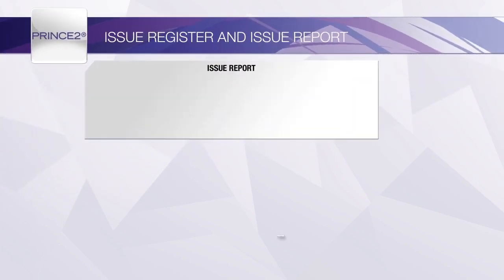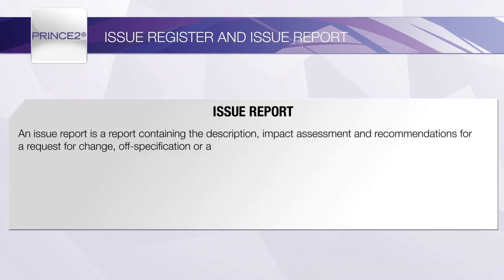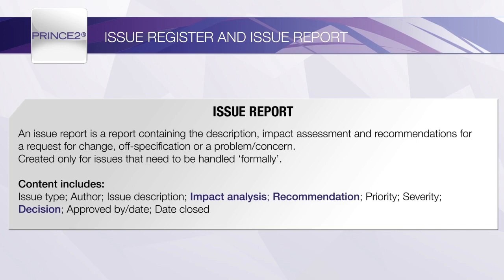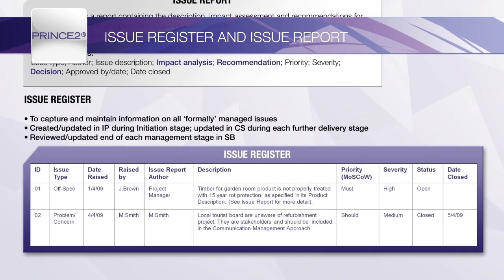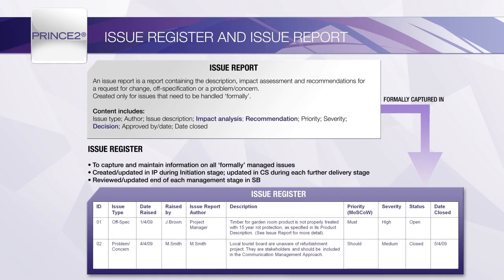It is important to understand the differences between an Issue Report and the Issue Register. An Issue Report is created to capture information about an issue that needs to be managed formally and will be created initially to record the information that is known. Thereafter, it is updated following an impact to include details of the effect that the issue has on stage and project costs, time and risks, and impacts on other products. It will also contain information on the recommended actions required to resolve the issue, as well as the decision that has been made. The Issue Register provides a summary of all formal issues being managed during the project, helping the project manager to easily monitor all issues at a glance.